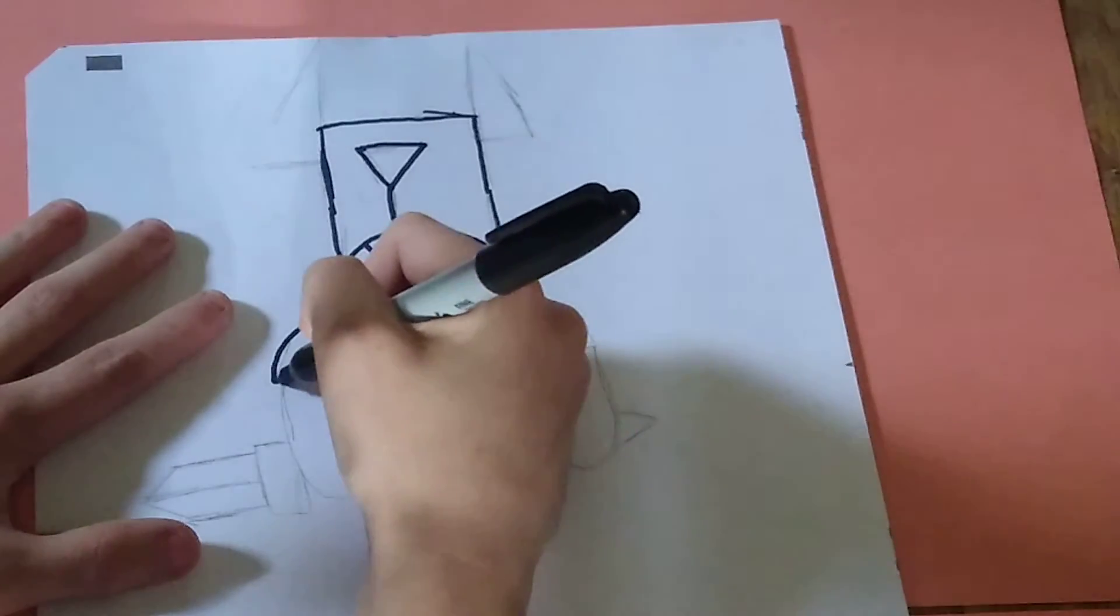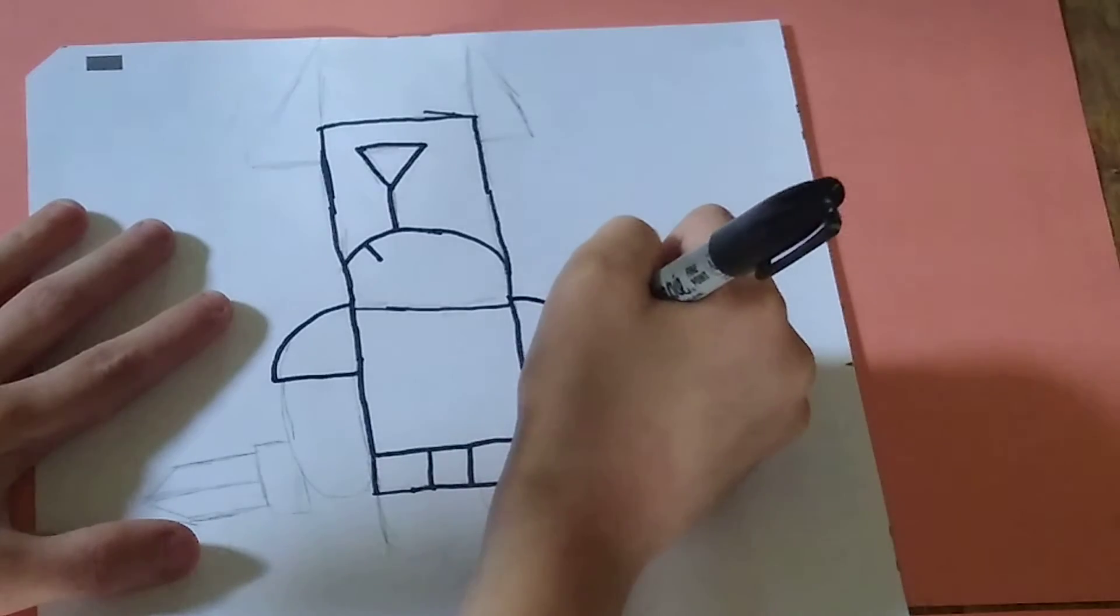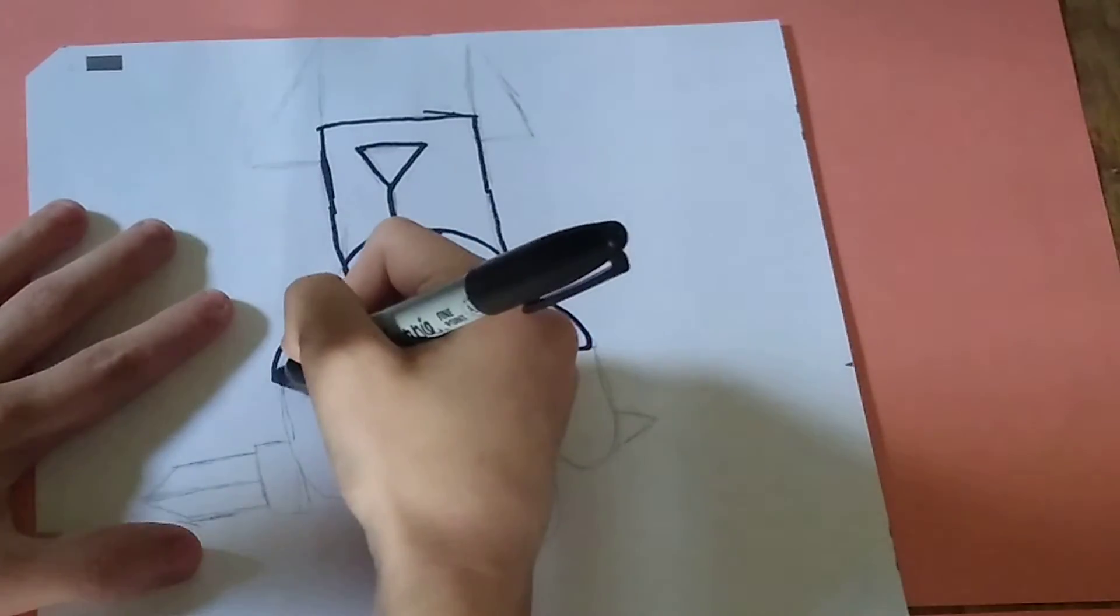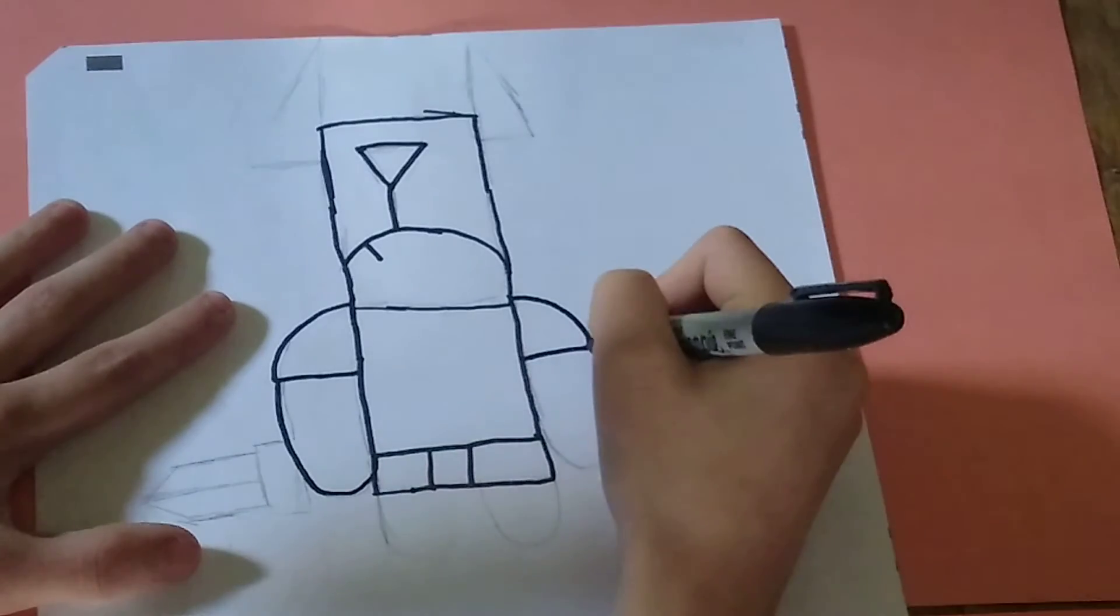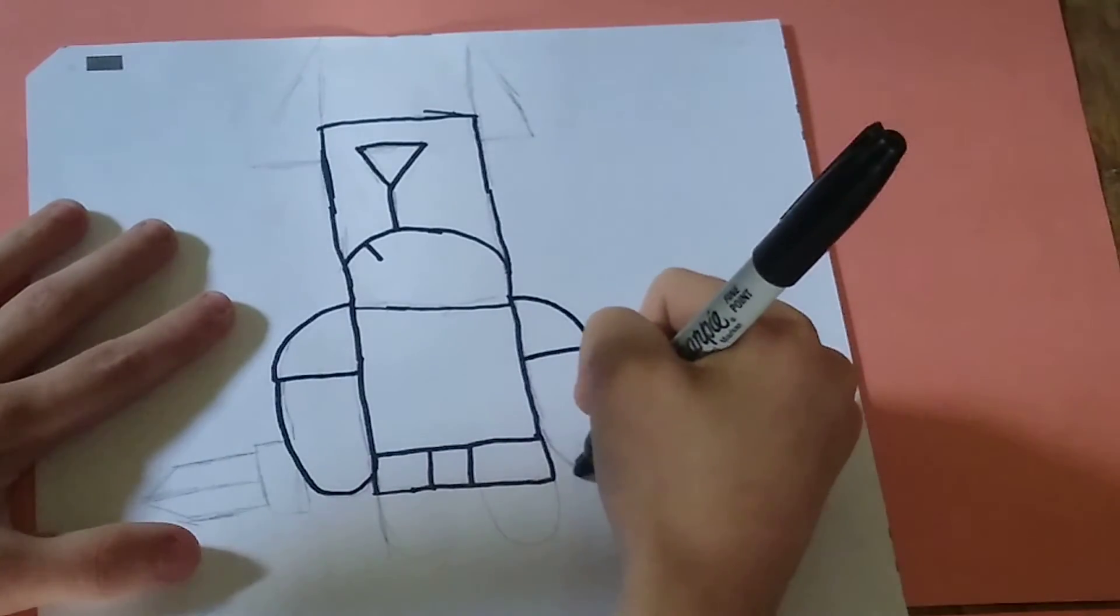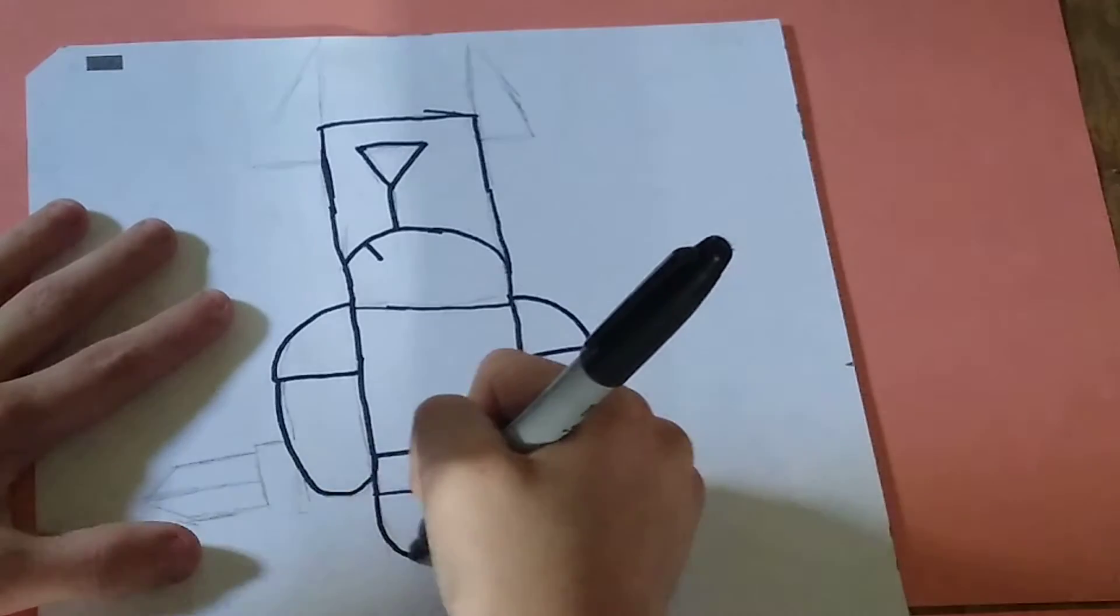And then you just do that. Do it on both sides. Then make those big long things for the circles, and do the same thing.